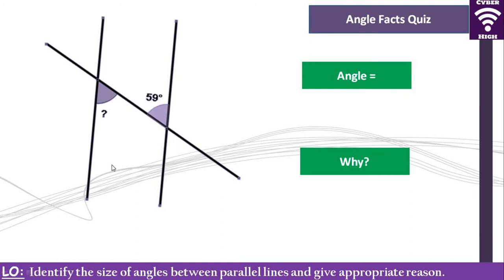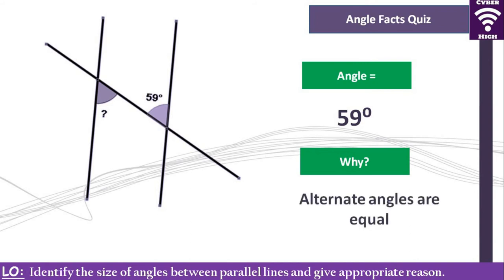What is the size of the angle marked with a question mark? It is 59 degrees — well done if you got 59. Why? That is an alternate angle.